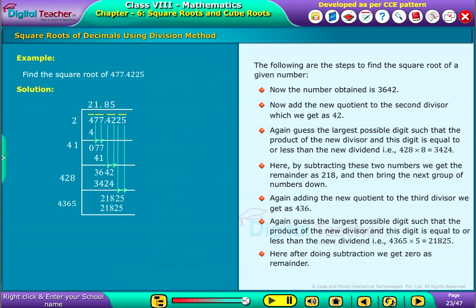Here, after doing subtraction, we get 0 as remainder. So, the square root of 477.4225 is 21.85.